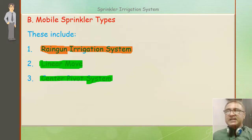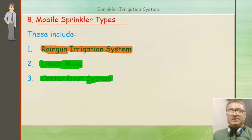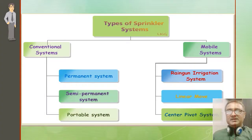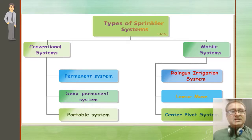Mobile sprinkler types — the second category — में तीन तरह के sprinkler types हैं: rain gun irrigation system, linear move system, and center pivot system। Classification summary: types of sprinkler system को conventional system और mobile system में divide करते हैं। Conventional में permanent, semi-permanent, और portable system हैं; mobile में rain gun irrigation, linear move, और center pivot system हैं।